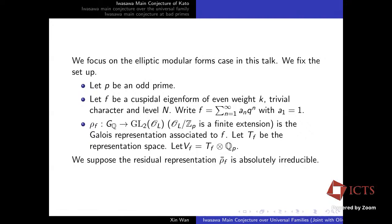This is a representation of the absolute Galois group G_Q into GL₂(O_L), where O_L is the coefficient field, which is a finite extension of Z_p. We write T_F to be the representation space, and V_F to be the Galois representation with field coefficients, namely T_F tensored with Q_p. We suppose the residue representation ρ̄_F is absolutely irreducible. Under this assumption, the mod-p representation is uniquely determined because the choice of lattice is only up to a scalar, so the residue representation is essentially a fixed representation.